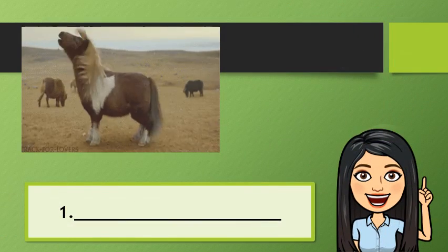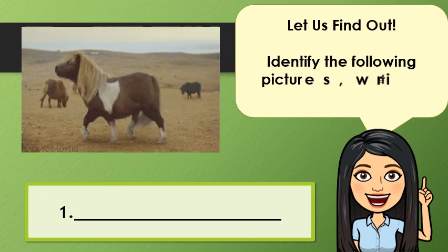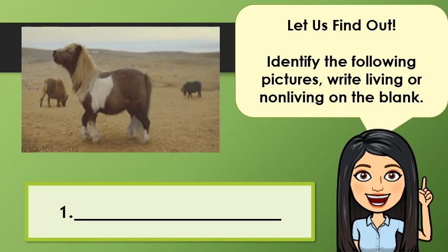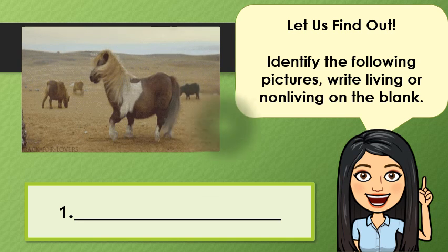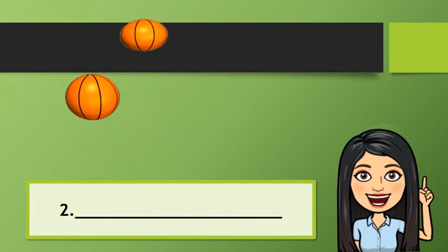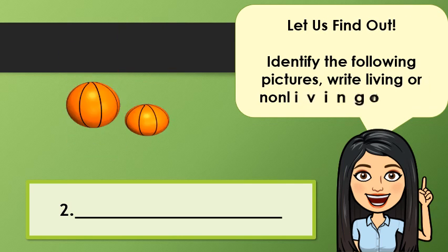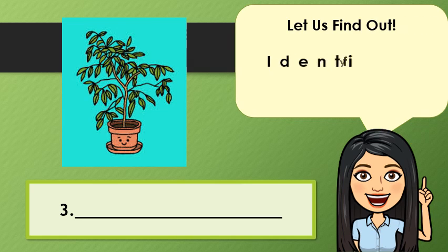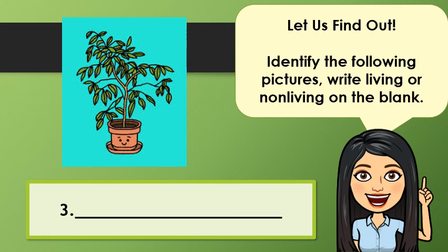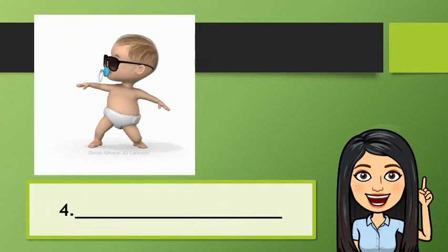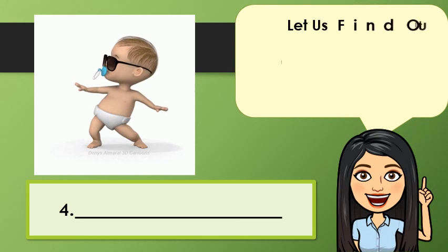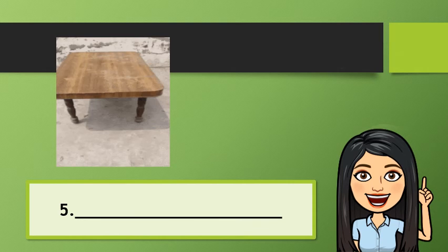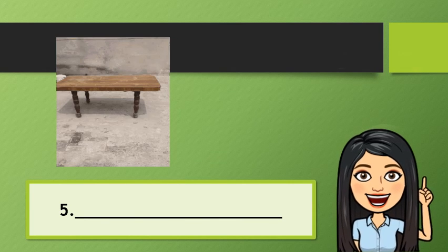Now, let's have some activities. Let us find out. Identify the following pictures — write living or non-living on the blank. Number one. Number two — are these living or non-living things? Number three — is this a living or non-living thing? What do you think? Number four — is this a living or non-living thing? Number five — is this a living or non-living thing?